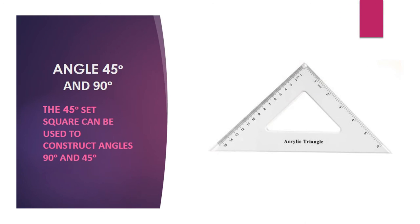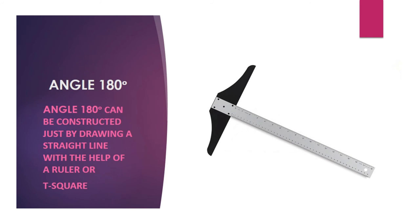Angle 45 and 90 degrees: the 45-degree set square can be used to construct angles of 90 and 45 degrees. Angle 180 degrees can be constructed simply by drawing a straight line with the help of a ruler or a square, as shown.